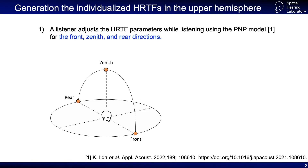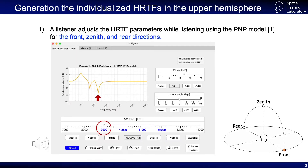We will explain the method to generate the individualized HRTFs for an arbitrary direction in the upper hemisphere. At first, a listener adjusts the HRTF parameters while listening using the PNP model for the front, zenith, and rear directions. The left figure shows the PNP model, by which a listener adjusts the notch frequency so that a sound image is localized in the front direction using the slider or buttons.